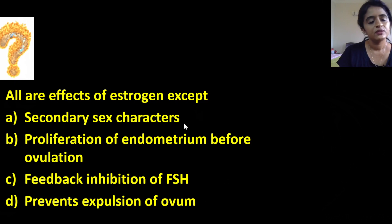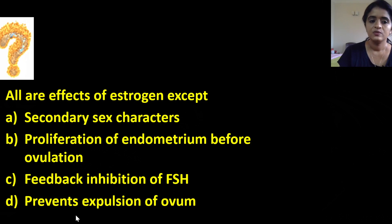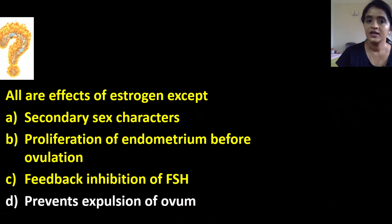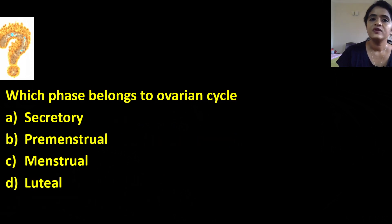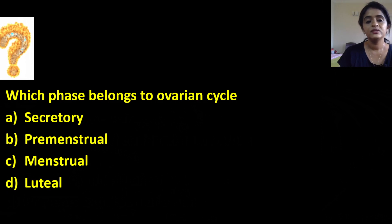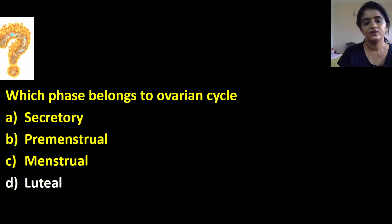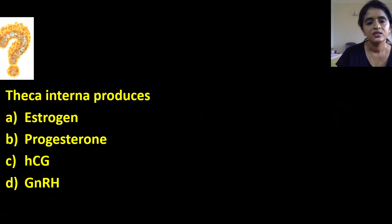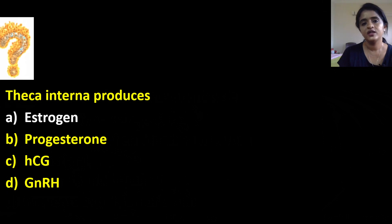Regarding MCQs: all listed effects are of estrogen except prevention of expulsion of the fertilized ovum — that is actually implantation, which is a function of progesterone. Which phase belongs to the ovarian cycle? The ovarian cycle consists of the follicular phase and luteal phase. Theca interna and theca externa are the outer coverings of the Graafian follicle — theca interna is vascular and produces estrogen, while theca externa is a fibrotic layer containing macrophages.